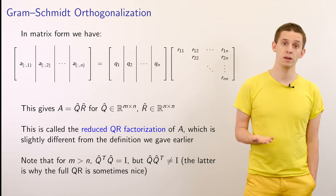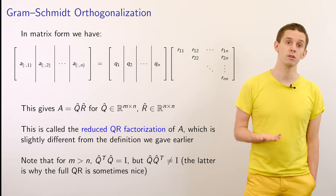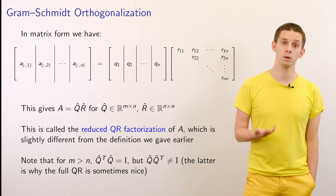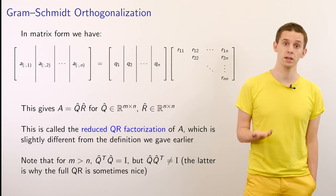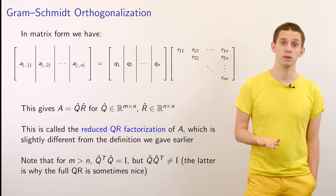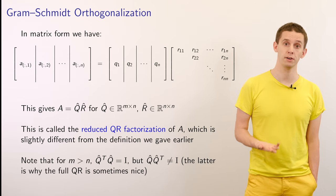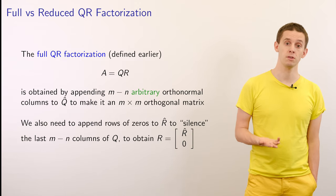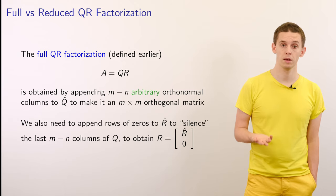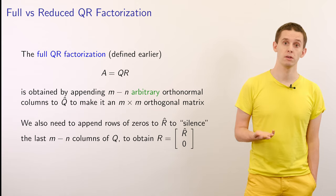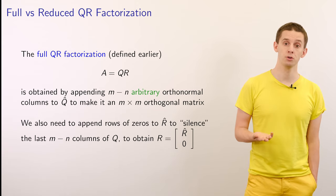We can note that for m greater than n, Q̂ transpose times Q̂ equals the identity, but we don't necessarily have that Q̂ times Q̂ transpose equals the identity. This latter condition is sometimes the reason why the full QR factorization is useful. The full QR factorization is where A equals Q times R, obtained by padding Q̂ with m minus n arbitrary orthonormal columns.